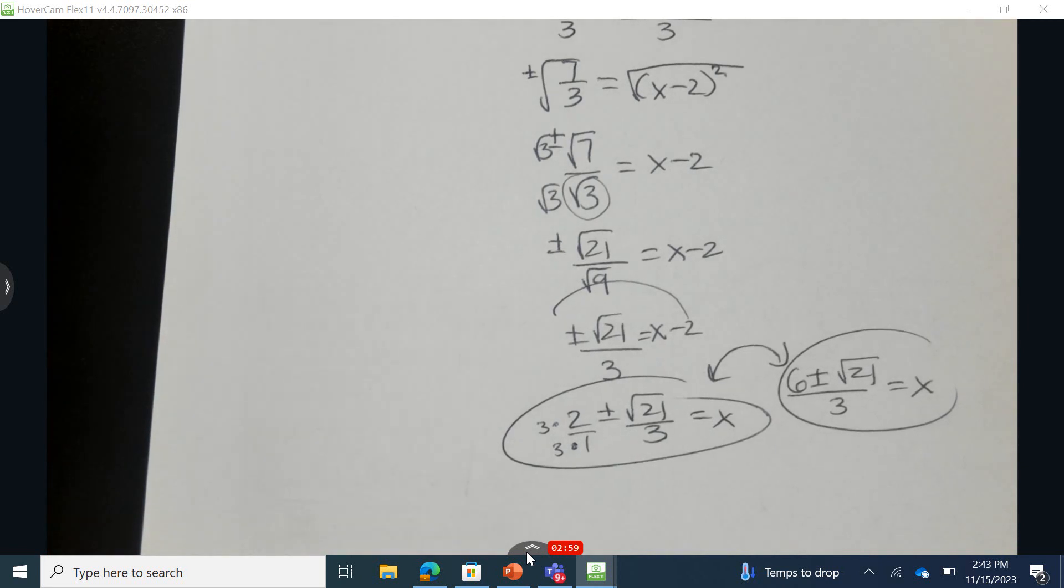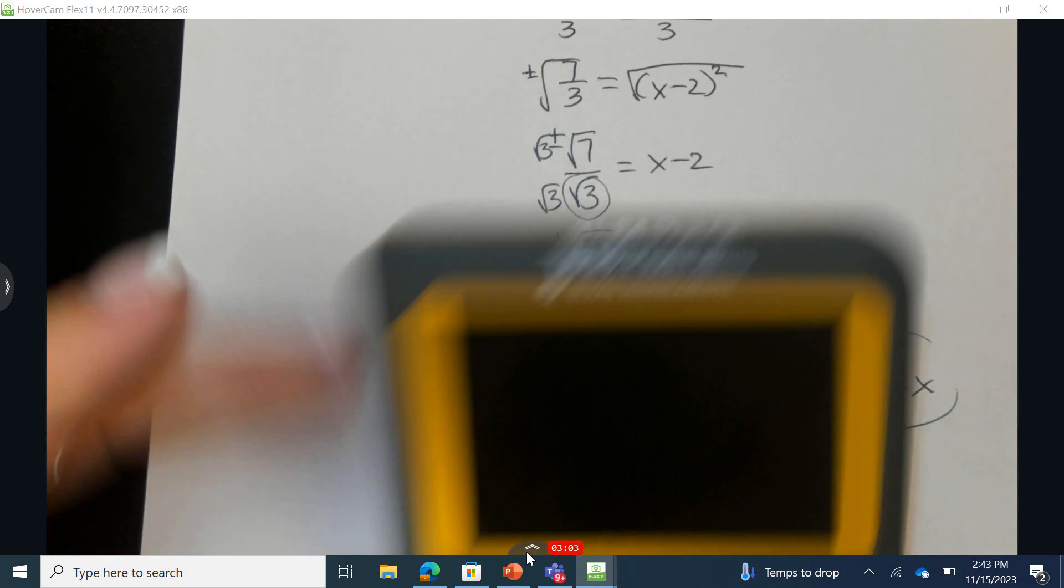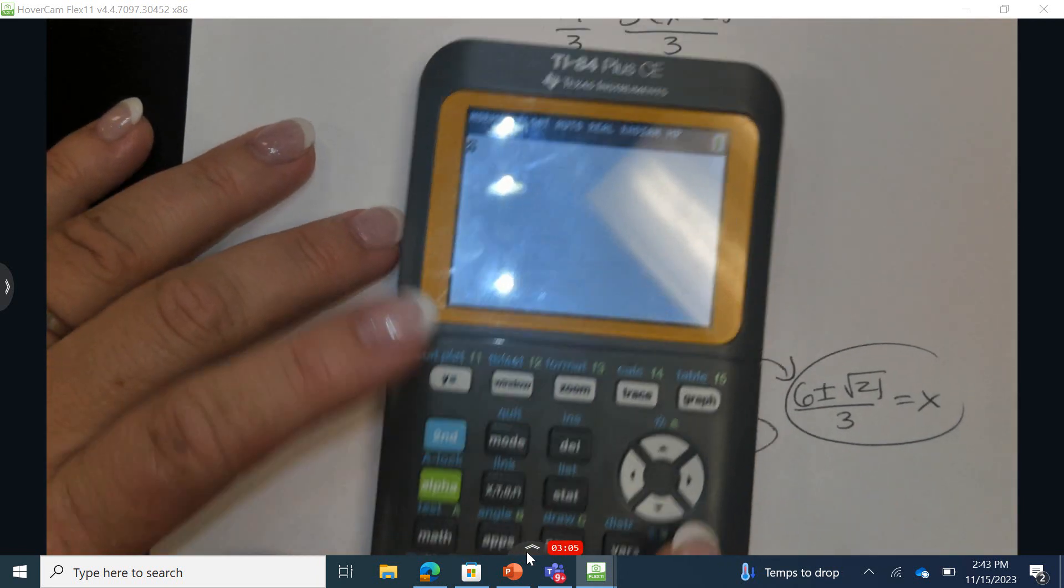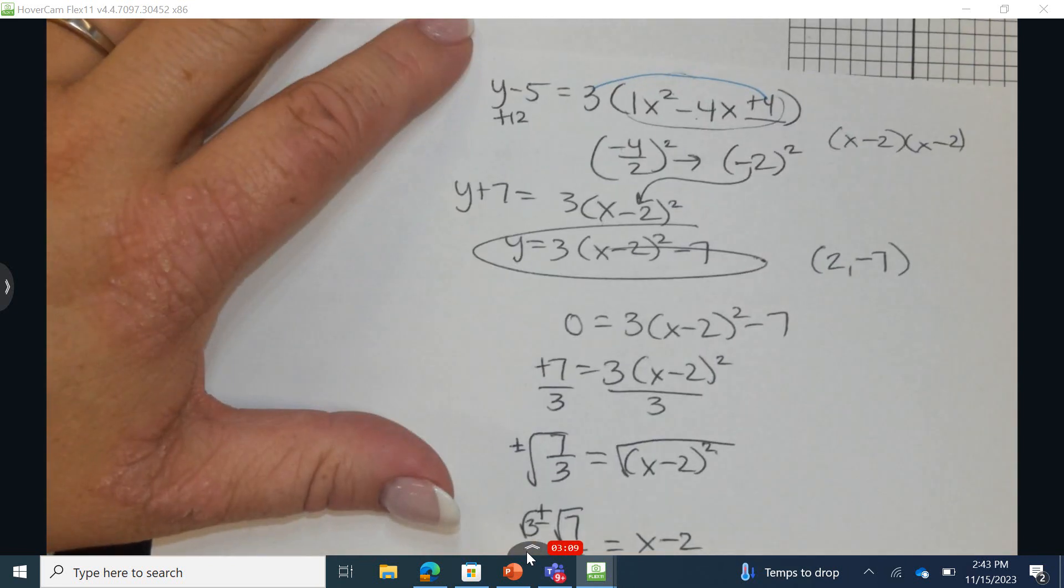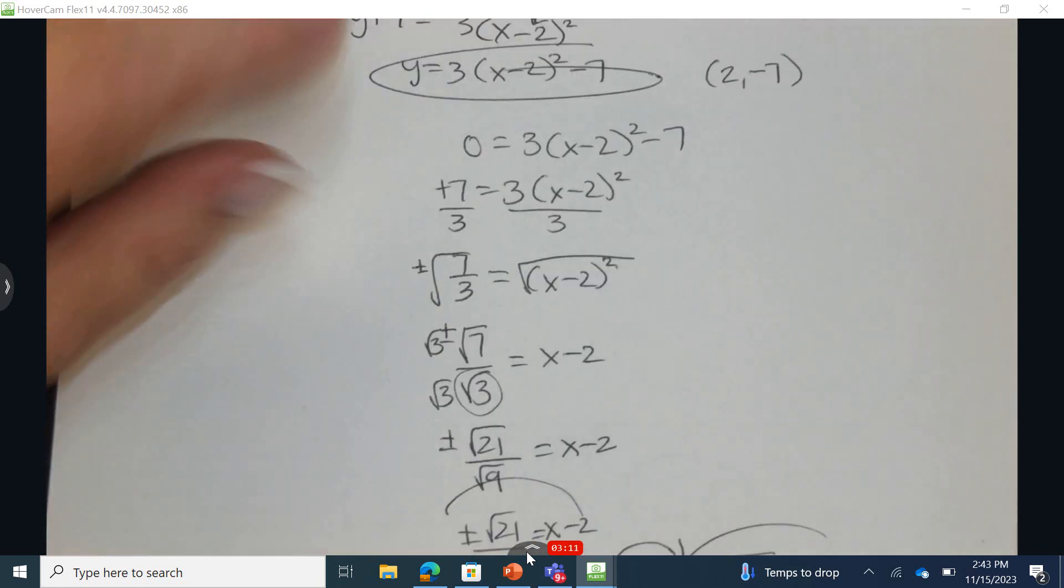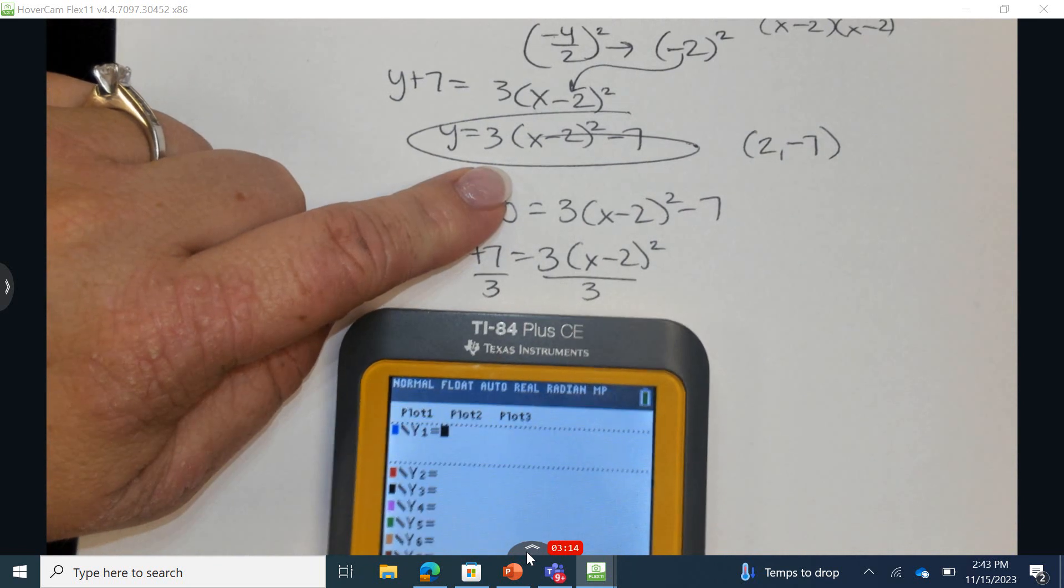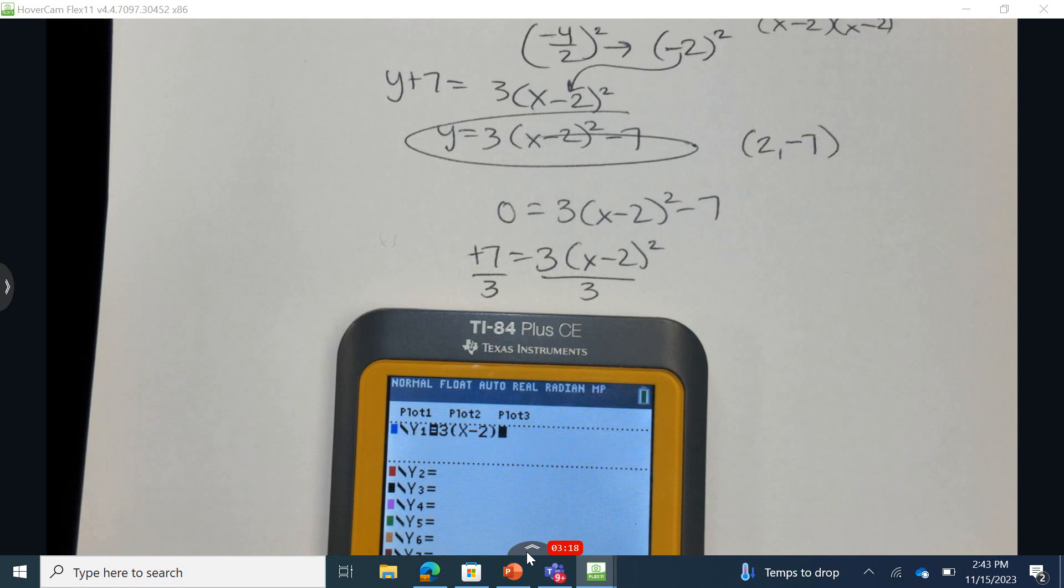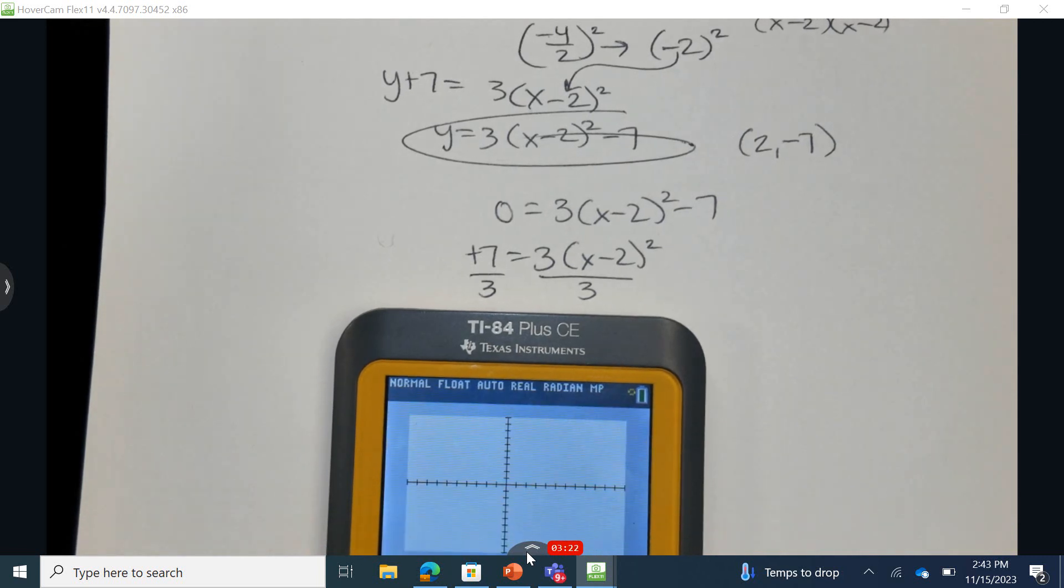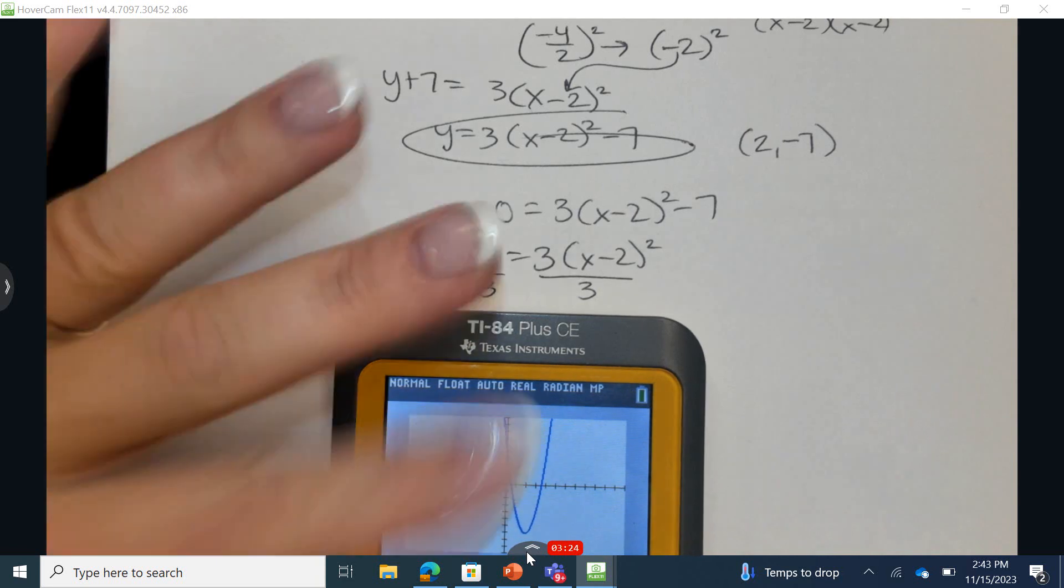Next, approximate the zeros using a graphing calculator. So I'm going to grab a graphing calculator. And I'm going to plug this in. It doesn't matter if I use this original in standard form, which is up here, or if I use what I have in vertex form. 3, x subtract 2 quantity squared, subtract 7, graphing it. This looks good.